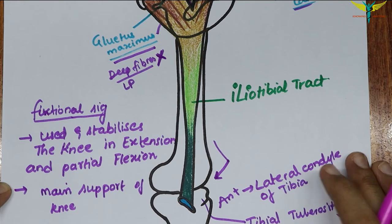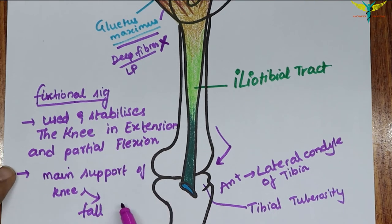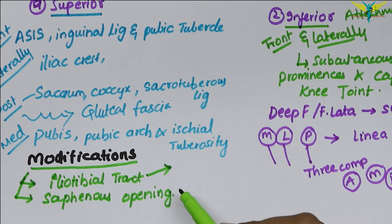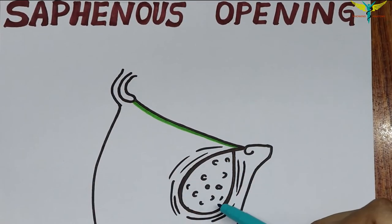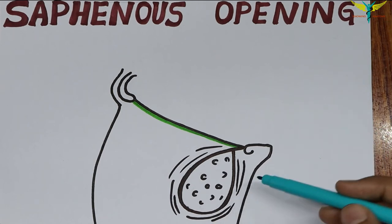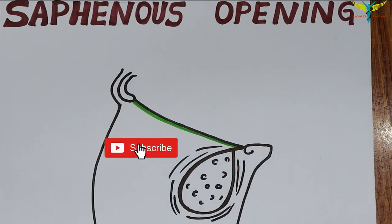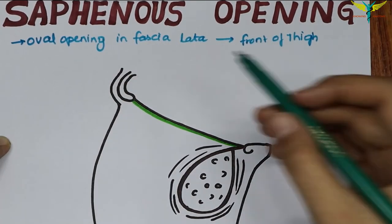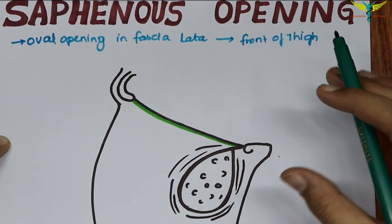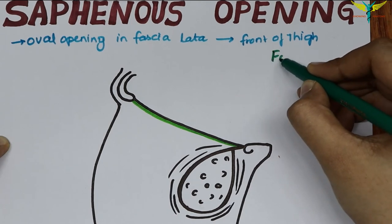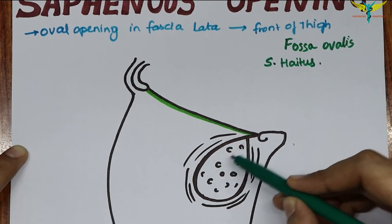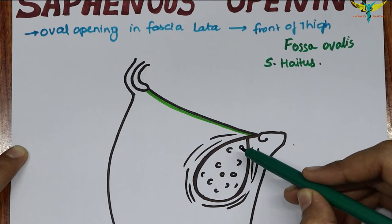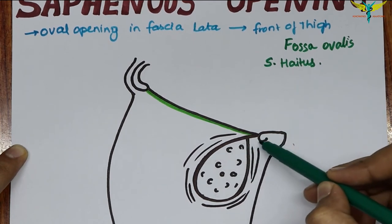Now let's talk about the second modification of the fascia lata: the saphenous opening. The saphenous opening is an oval-shaped opening in the fascia lata, present in the upper medial part of the front of the thigh. It is also called the fossa ovalis because of its oval shape, or the saphenous hiatus. The center of the opening is about four centimeters below and lateral to the pubic tubercle.